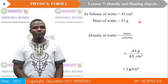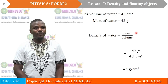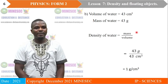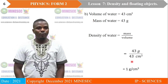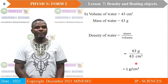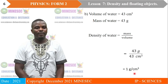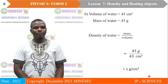For us to be able to calculate or determine the density of a substance, we need two physical quantities: mass and volume. Once we have measured the mass and we have also measured the volume, we calculate density by taking mass divided by volume. The mass of water calculated is 43 grams and the volume given is 43 cm³. Therefore, the density of water will be 43 grams divided by 43 cm³. 43 cancels with 43, and the answer gives us 1 gram per cm³. So the density of the water given is 1 gram per cubic centimeter.